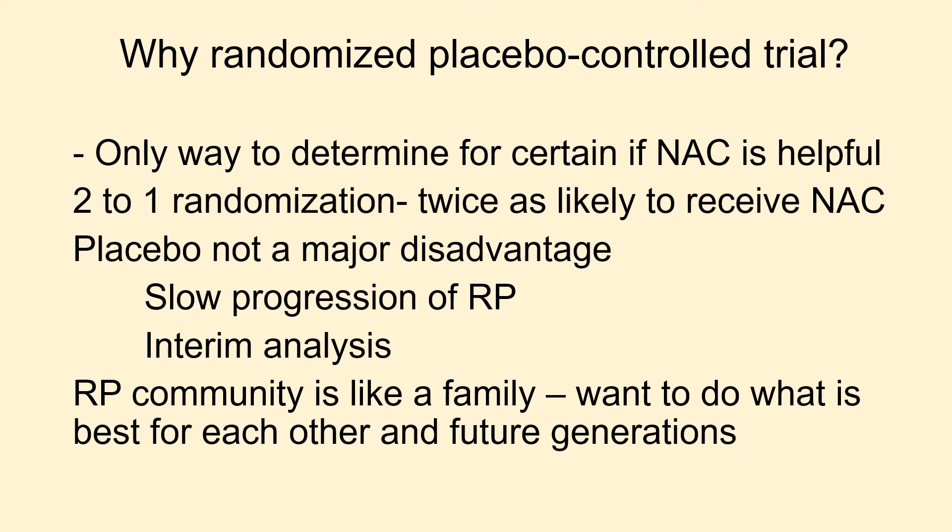When we explained the need for a randomized placebo-controlled study, the survey respondents understood and were in favor of it. Such a placebo-controlled trial is the only way to determine with certainty if NAC provides benefit in patients with RP. The way it works is to randomly assign patients to two groups — two-thirds in the NAC treatment group and one-third in the placebo group. The random assignment ensures that the only difference between the two groups is whether they receive NAC or placebo, and any difference in RP progression can be attributed to NAC.